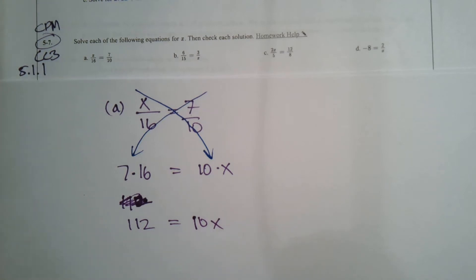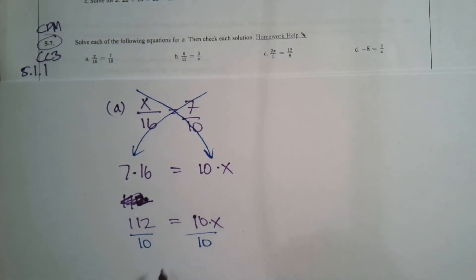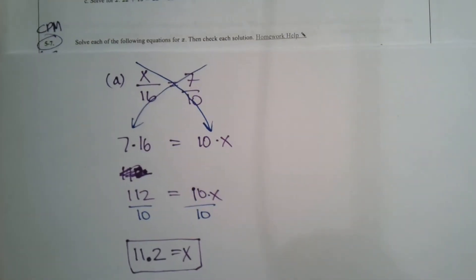So now looking at that, the next step would be to divide both sides by 10 to get your X alone, right? Inverse operation, 10 times X. So the inverse is division. So we divide by 10. And so our X would equal, well, 112 divided by 10 is 11.2. That decimal place moves over once when you divide by 10. So there's my answer using that method of cross multiplication.